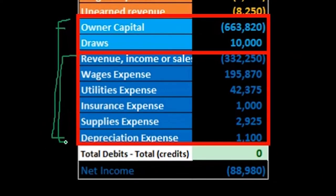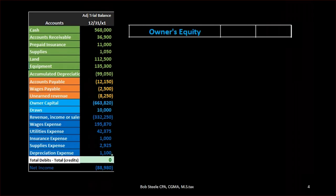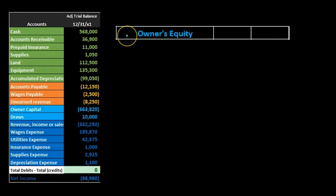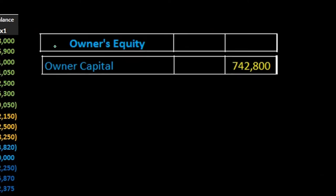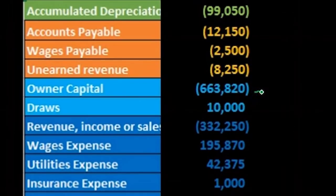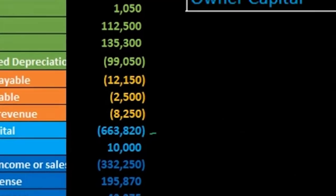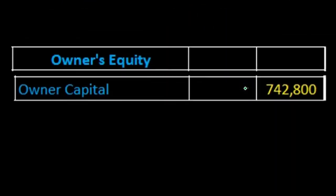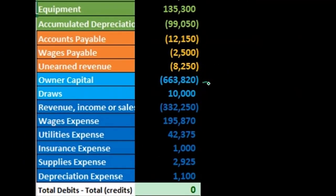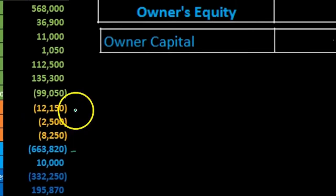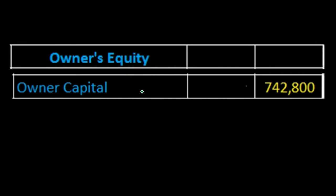In terms of the balance sheet we can represent all the blue accounts as basically one part of the balance sheet — the equity section. Therefore under the equity section we only have one account: the owner's capital account. Now you might be saying that the owner's capital account is 663,820 — where did we come up with 742,800? The thing about that is that this capital account represents the beginning capital as of the beginning of the time period. We don't have a date here to tell us that, but the balance sheet says it's as of 12/31, meaning all accounts are as of that point in time.